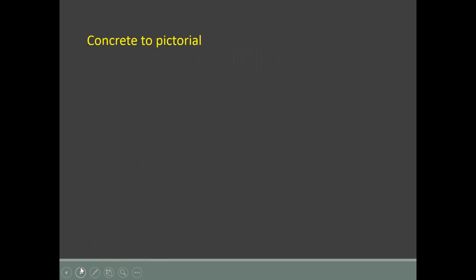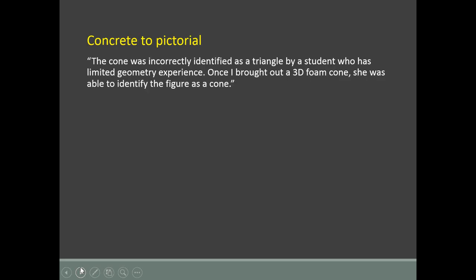Here are some quotes from teacher observations that illustrate why we need to work on these areas. Moving from concrete to pictorial — from hands-on to sketches or images: a cone was incorrectly identified as a triangle by a student with limited geometry experience. Once I brought out a 3D foam cone, she was able to identify the figure as a cone. That physical, hands-on cone helped her identify the more abstracted picture.